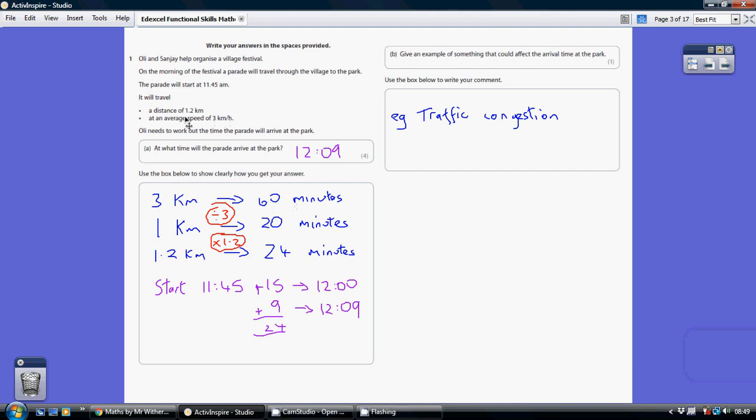Now we need to travel 1.2 km. So that's going to be 1.2 lots of 1 km. So we do 20 times 1.2 to see that it would take us 24 minutes to travel 1.2 km. So 24 minutes is how long the journey would take.